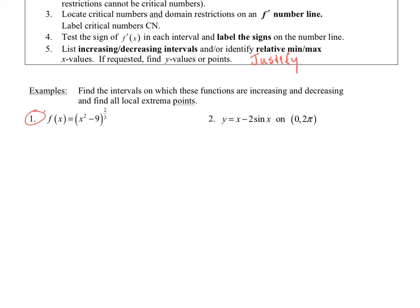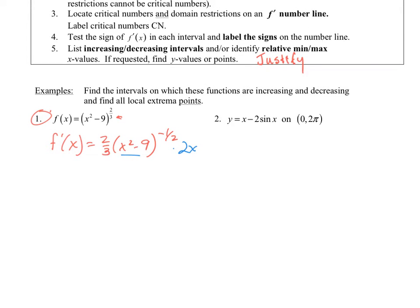For number one, we should be okay with domain because this is the cube root — when you have the three below, it's a cube root, and we don't have domain restrictions on negative numbers with cube roots. So let's take the derivative: I bring the two-thirds out in front, get x squared minus 9 raised to one less power, then multiply by 2x from the chain rule.